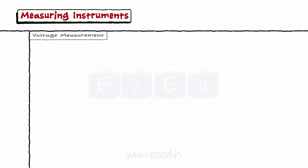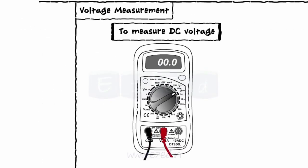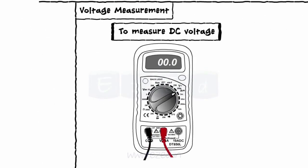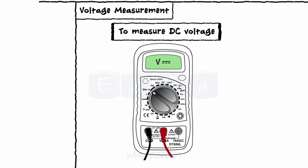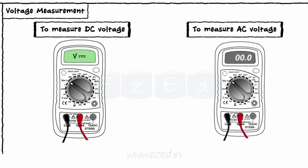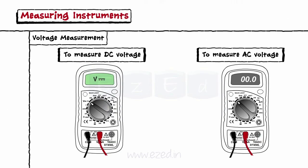Next is the voltage measurement. To measure the DC voltage, we place the red wire into VOHM port and black lead into COM port, and the dial or switch into VDC position. To measure an AC voltage, we place the red wire into the VOHM port and the black wire into the COM port. Turn the dial or switch to VAC.